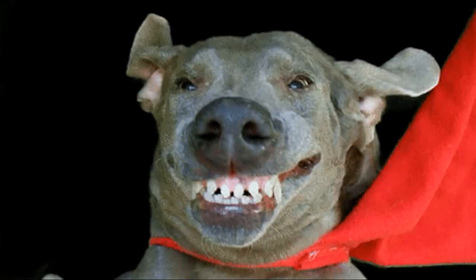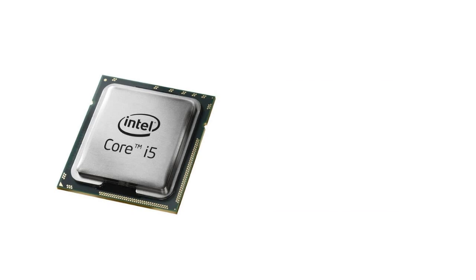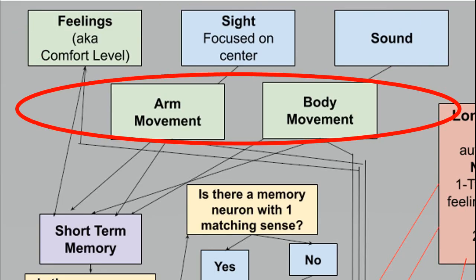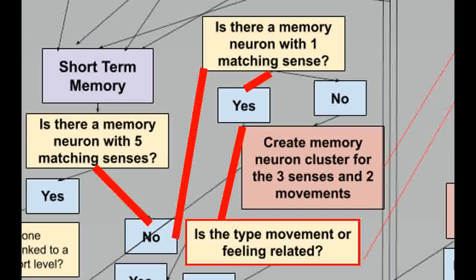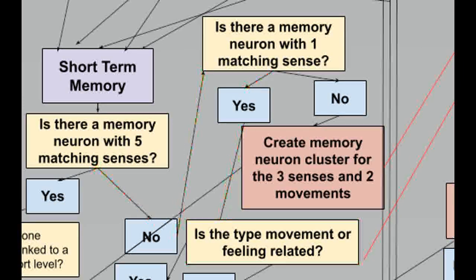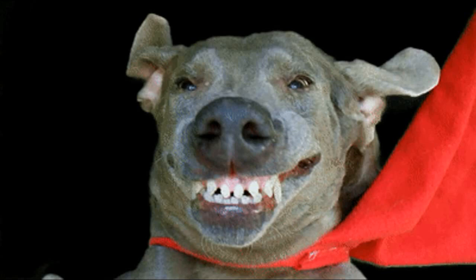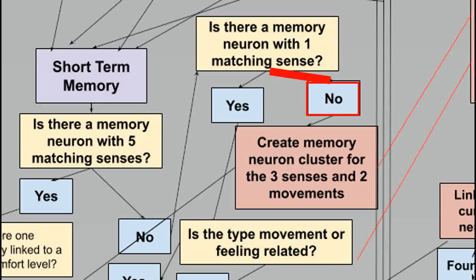The short-term memory is more like a processor that takes long-term memories and decides what to do with them. It first attempts to find a long-term memory with matching senses and movements. If there aren't any matching memories, then it will find a neuron with just a matching feeling or movement. The reason for this is your feelings and movements can change, but your vision and sight cannot. If this also fails, then a neuron cluster with all five neuron types will be created.